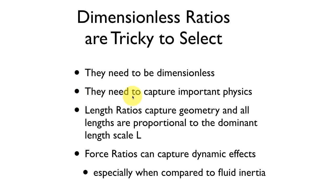Dimensionless ratios are tricky to select. They need to be dimensionless, otherwise we'll wind up with complications around units. They need to capture the physics that are important to us. For instance, in the boats, the sail area to displacement ratio was capturing some of the physics of the tippiness of the boat.